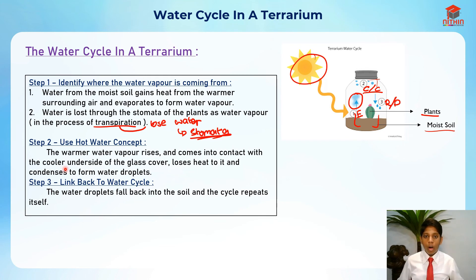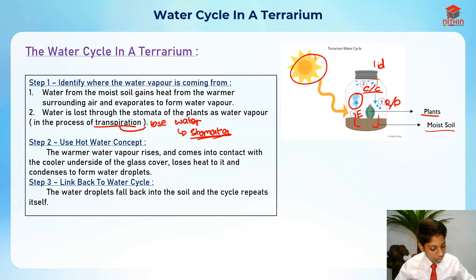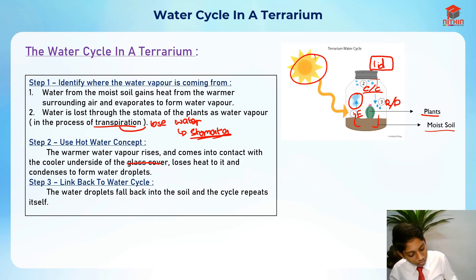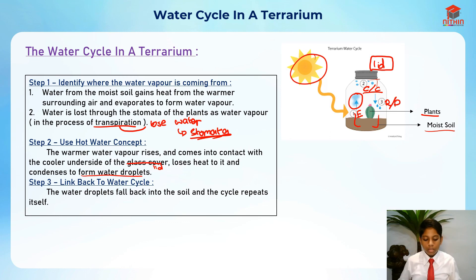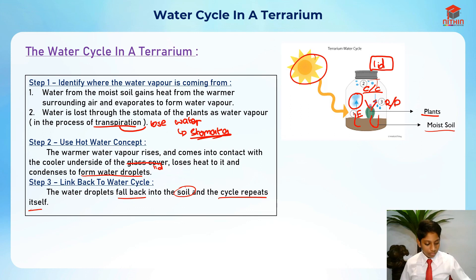For step two, we need to use the condensation concept. The warmer water vapor rises and comes into contact with the cooler underside of the lid, loses heat to it, and condenses to form water droplets. The water droplets fall back into the soil and the cycle repeats itself. This is how the plant does not lose water — it still has the water it needs to survive, because even though the plant gives out water, it gets it back again.